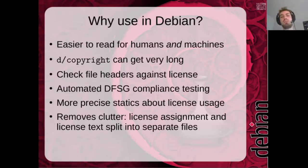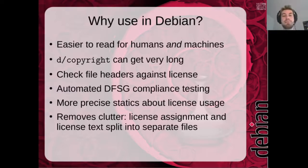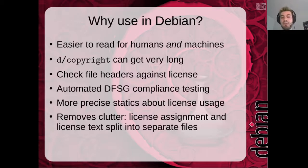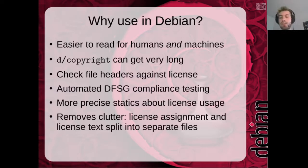We could also make more precise statistics about license usage, because the identifiers are standardized. And it would remove some clutter. Right now the license assignment — which file has which license — is in the same file as the license text. If we split these into two files, one for license texts and one for assignments, that would be cleaner and remove some of the clutter.